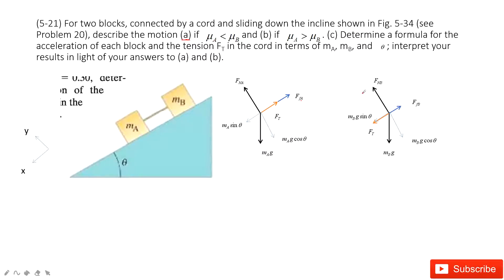Since friction for A is smaller than for B, the tension must exist between the two objects. Because friction A is smaller, object A has more tendency to move down. Object B, with larger friction, is less likely to move down. So there must be tension — the cable acts as a tension force Ft on both objects A and B.